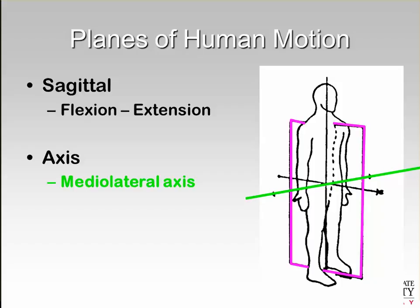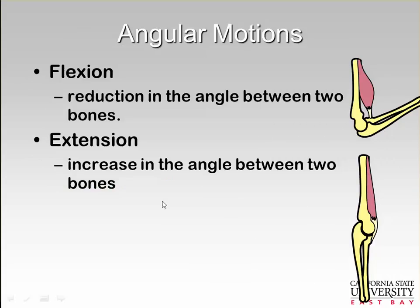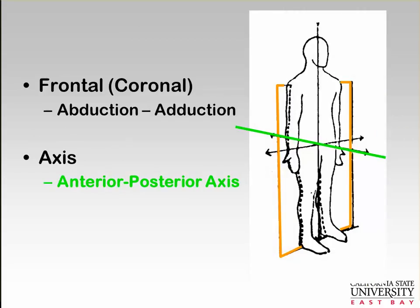Flexion is a reduction in the angle between two bones—so elbow flexion is when your hand comes very close to your glenohumeral joint. Extension is an increase in the angle between two bones.